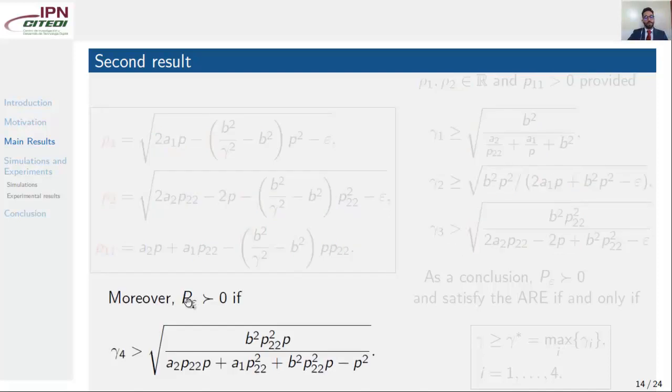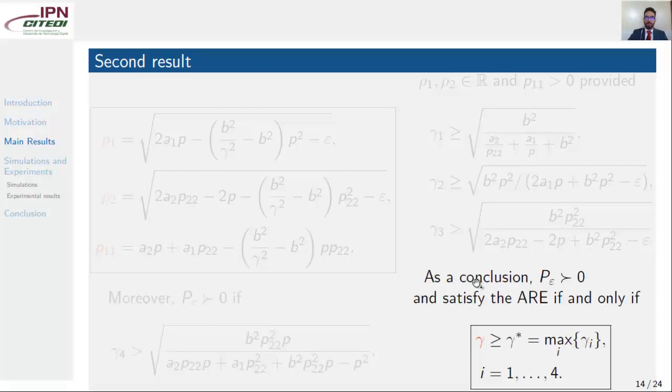Moreover, p-epsilon is positive definite if gamma is greater than this value. As a conclusion, p-epsilon is positive definite and satisfies the algebraic Riccati equation if and only if gamma is greater than the four values previously shown.